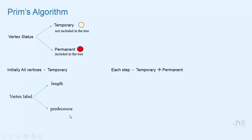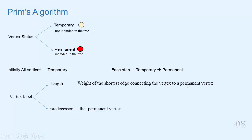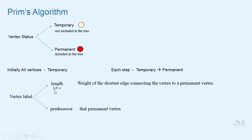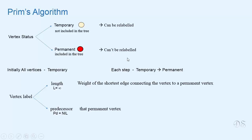Each vertex is given two values: length and predecessor. Length of a vertex represents the weight of the shortest edge connecting the vertex to a permanent vertex, and predecessor represents that permanent vertex. When the algorithm starts, the length of all vertices is initialized to infinity, which is a very large number, and predecessor is initialized to nil, which is taken as minus 1 since our vertices start from 0. A temporary vertex can be relabeled — its length and predecessor values can be changed — but once a vertex is made permanent, it cannot be relabeled. For making a vertex permanent in each step, the greedy approach is used: the vertex which has minimum length is made permanent.